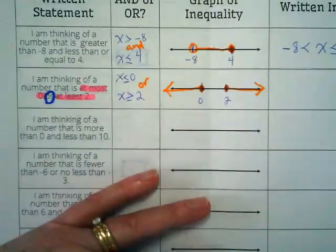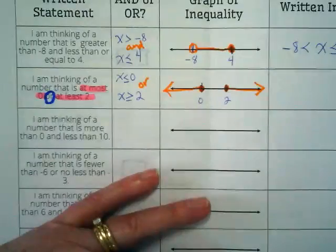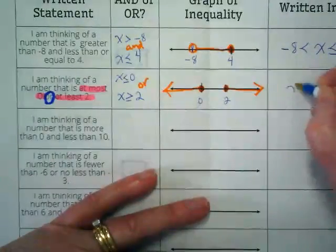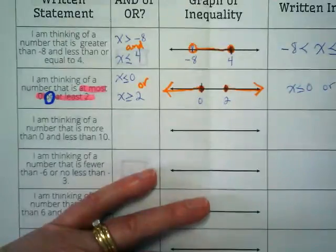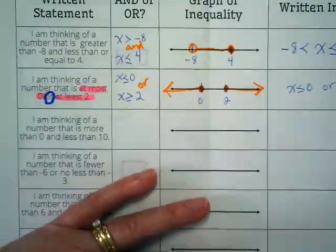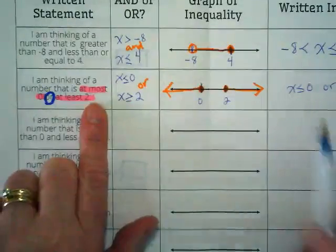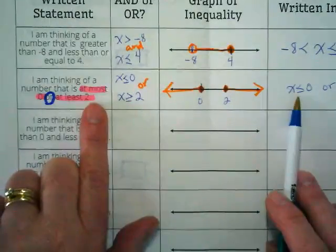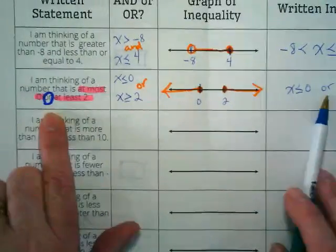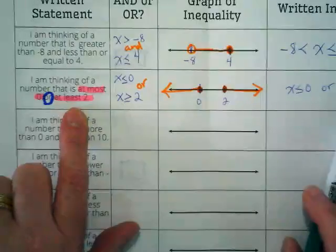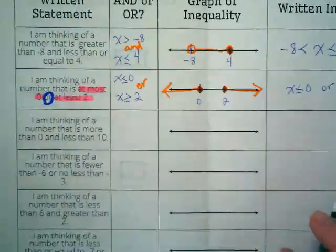So, let's look at this again, and I want you guys to look at how what we write as the written statement matches the words. X is less than or equal to 0, or X is greater than or equal to 2. If you look at what this said, X is at most 0, or X is at least 2. Are we good? Yes.